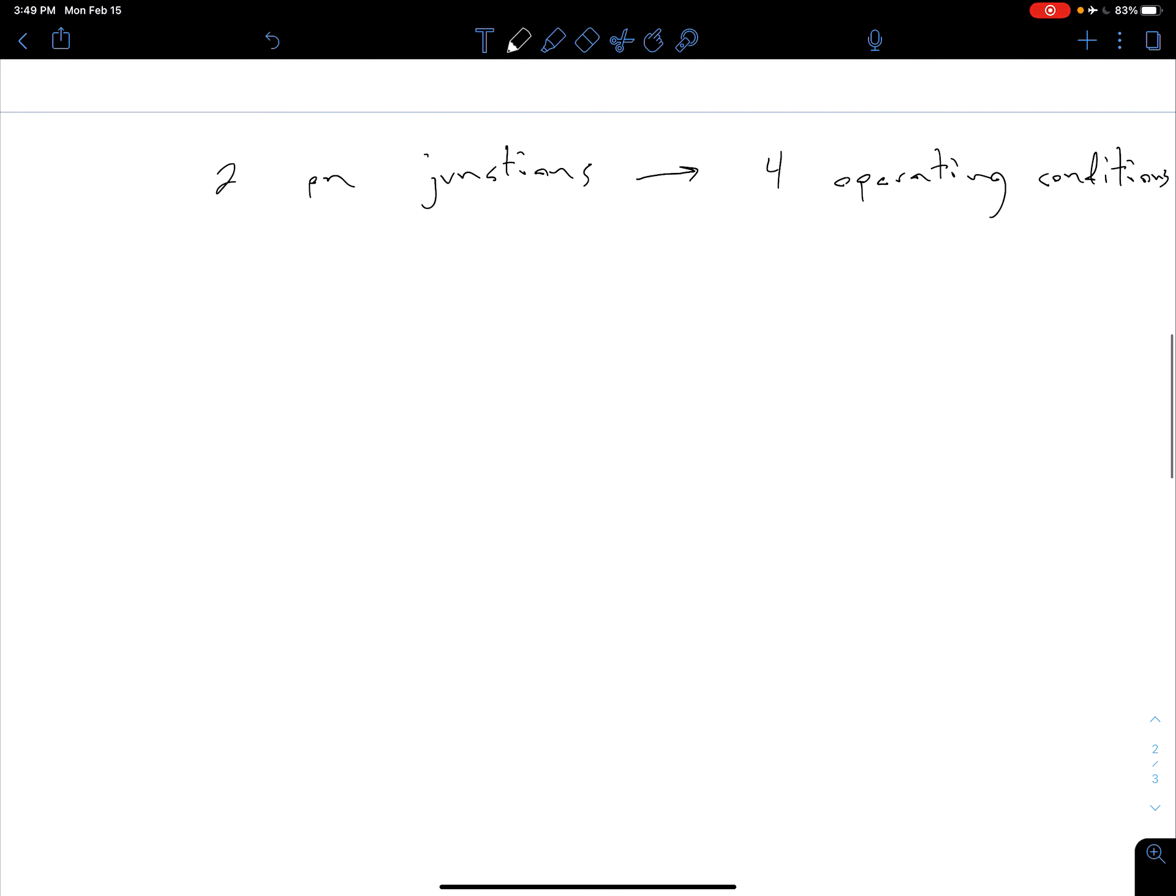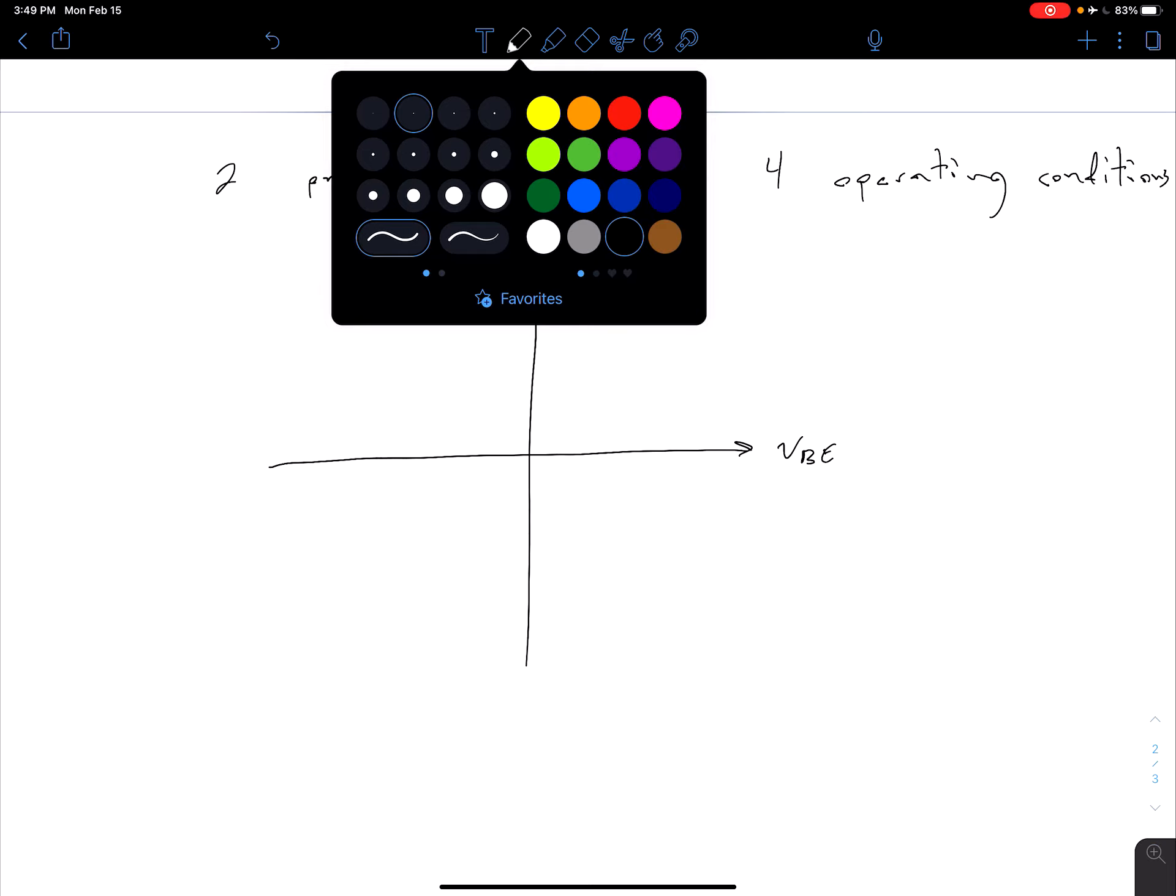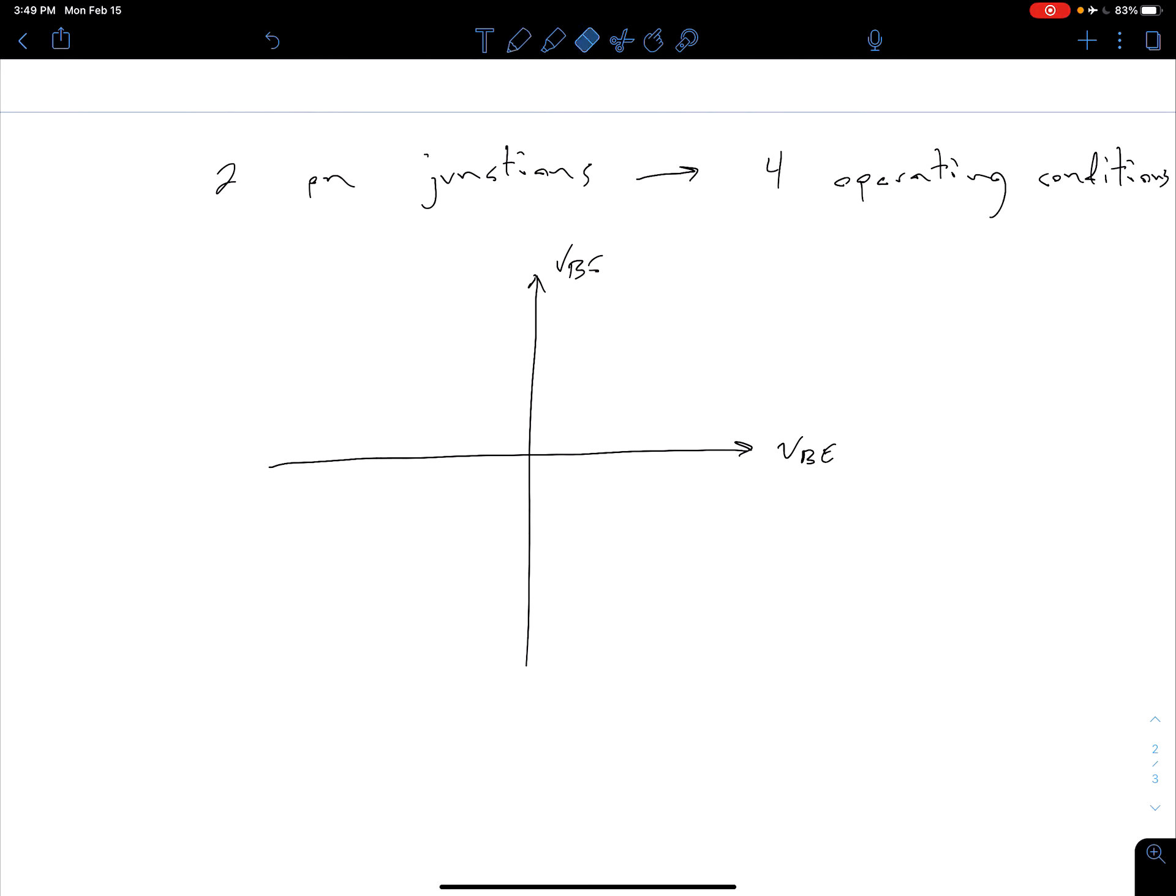With those two voltages in mind, I can define my four different operating conditions. On one axis I'm going to plot VBC, and on the other axis VBE. I should say I'm not really doing a plot, rather I'm just going to describe what's going on in each of these four regions. One region we're going to look at is our forward active mode. That happens when we have the BE junction forward biased, so we're in the right half plane here, and our BC junction is reverse biased, so we're in the negative part for our BC junction.